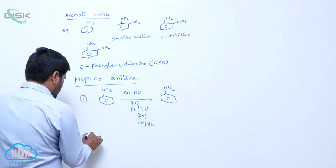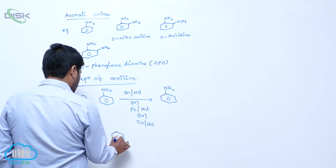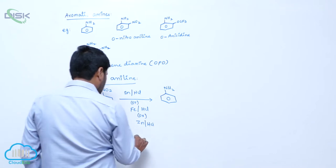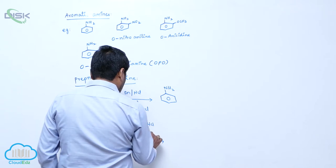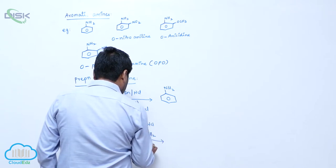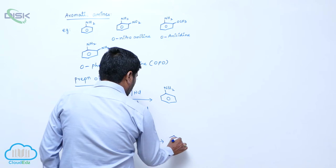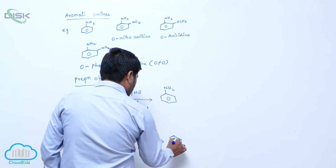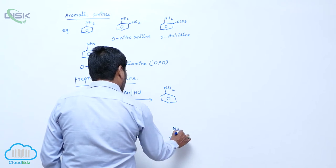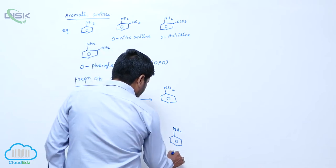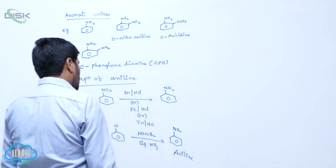Second method: from chlorobenzene. Chlorobenzene reacts with sodamide in the presence of liquid ammonia to form aniline.